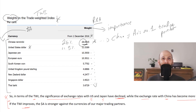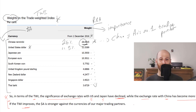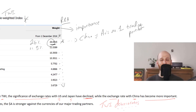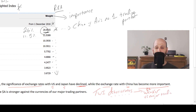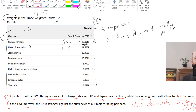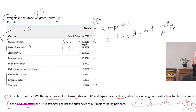In terms of the language we use: if the TWI improves, the Australian Dollar is stronger against the currencies of our major trading partners. In contrast, if the TWI deteriorates, then the Australian Dollar is weaker against the currencies of our major trading partners.